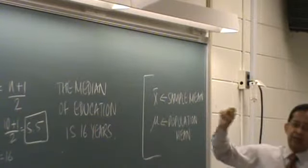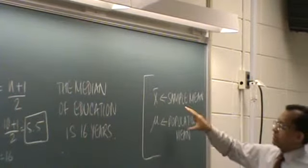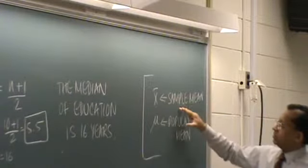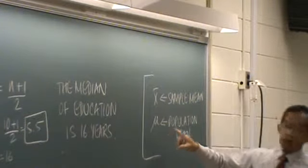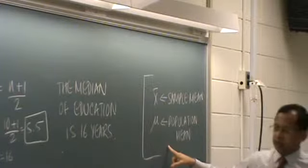So x bar, that's the symbol for sample mean, and mu, that's what is used for population mean.